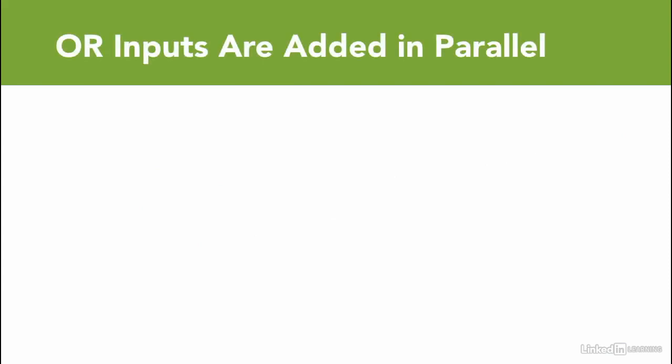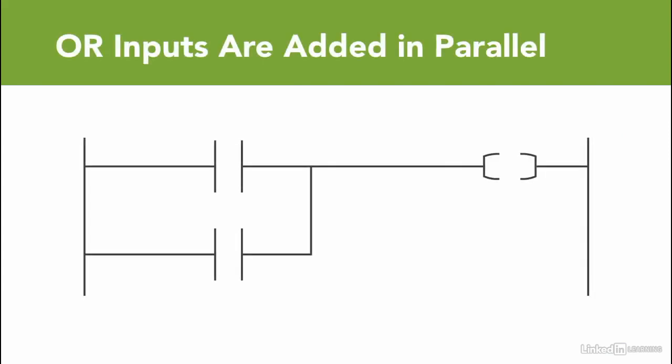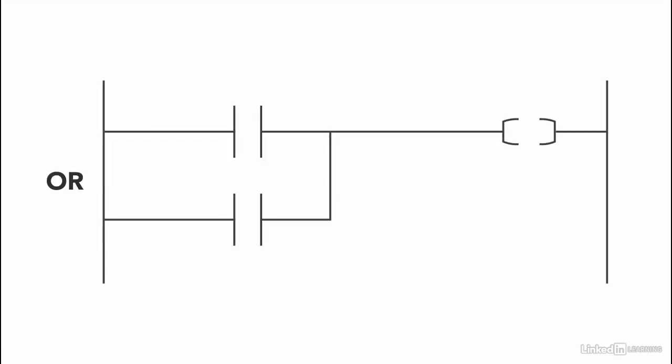The way to add OR inputs is to add them in parallel. This is how the OR instructions are placed. Think about it as another route to the output, another option, OR.